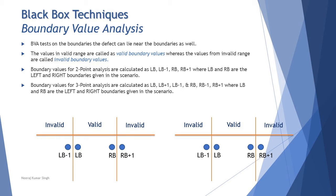To understand it better, let's take a quick look at a particular example. But before that, we have quick formulas to evaluate the values for three-point analysis: LB, LB plus one, LB minus one, and RB, RB minus one, RB plus one.